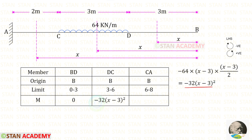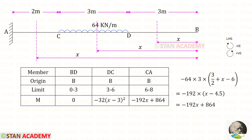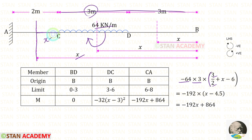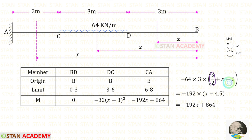Now let us find the moment M in member CA. Up to the section we have the UDL of 64 acting over a distance of 3, in the clockwise direction (negative). We multiply by distance 3, then open a bracket with 3/2 plus the remaining distance (x minus 6), giving 3/2 plus (x minus 6). Simplifying, 3/2 minus 6 gives minus 4.5, so we get minus 192 multiplied by (x minus 4.5).